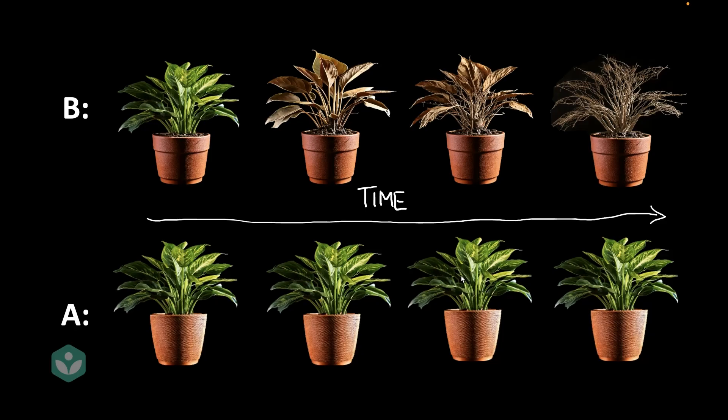Now, this gave Arpit the confidence that most probably this lack of sunlight was the reason for plant B to die. But he wanted to be 100% sure.